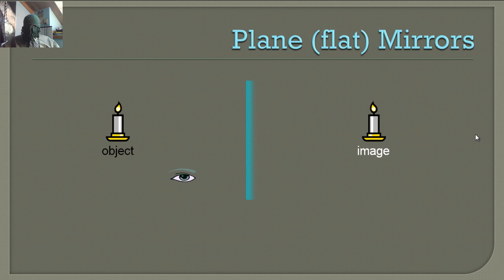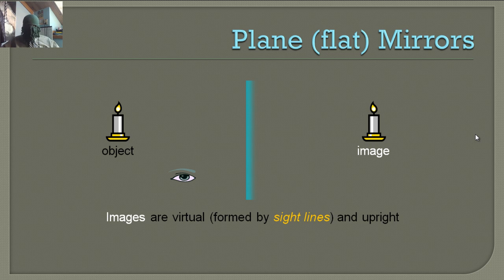There are different types of mirrors. The first one is the easy one: plain or flat mirrors. Images are virtual — they're formed by sight lines — and upright. They're virtual because it's not the real object we're looking at, we're just looking at the image.